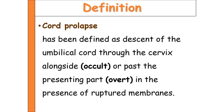If the cord is lying alongside the presenting part, that is known as occult cord prolapse. If it is lying in front of the presenting part, it is known as overt cord prolapse.